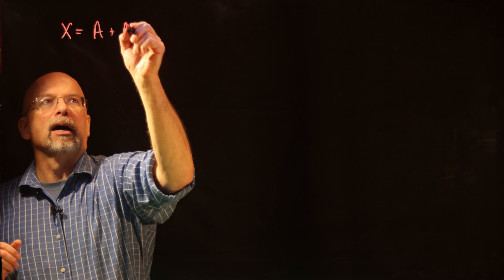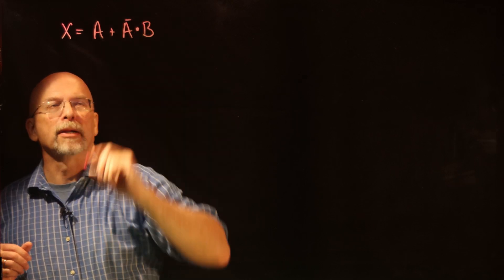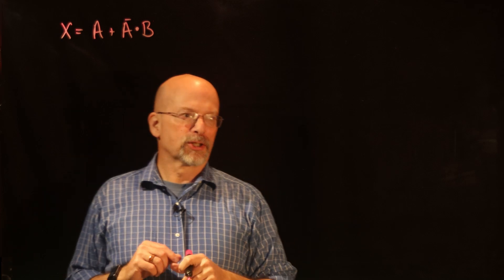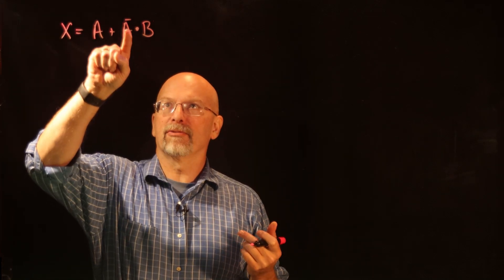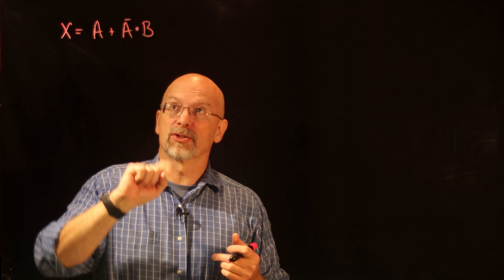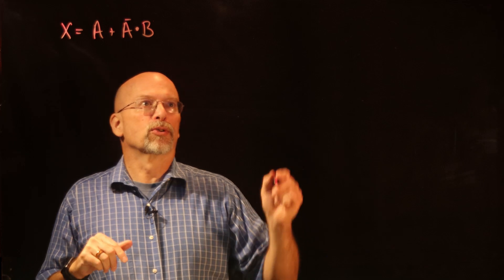But before we do that, I want to show you a quick example of how boolean expressions — you can manipulate them, move them around, change them around, so that we can have two expressions that are exactly equivalent. The output and result will be the same thing. So let's do one real quick: x equals a OR (a_bar AND b). It's a simple expression. We have an inverter for a_bar, an AND gate for a_bar and b, and an OR gate combining everything for output x.